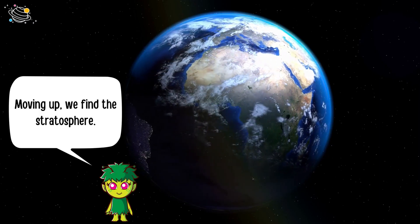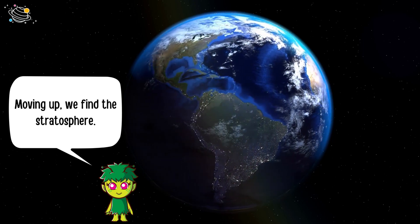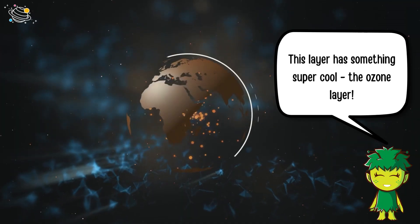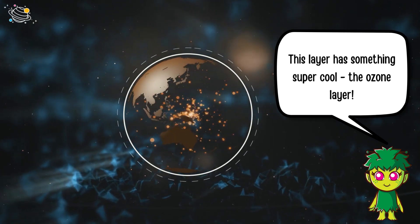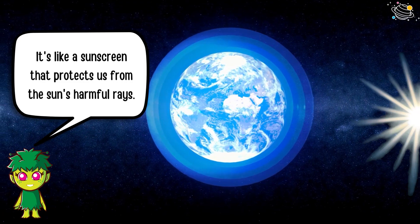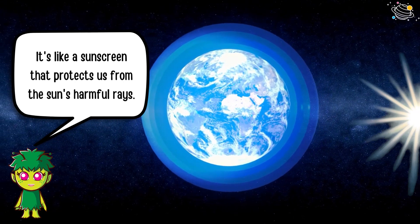Moving up, we find the stratosphere. This layer has something super cool - the ozone layer. It's like a sunscreen that protects us from the sun's harmful rays.